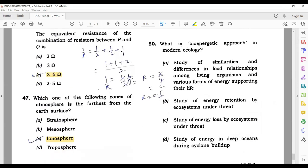Next question: what is the bioenergetic approach in modern ecology? The answer will be the first option: study of similarities and differences in food relationships among organisms and various forms of energy supporting their life.